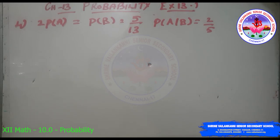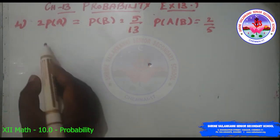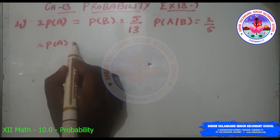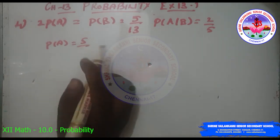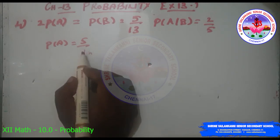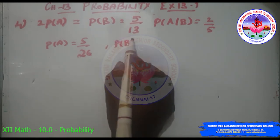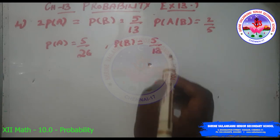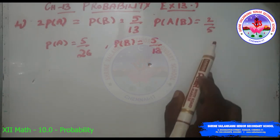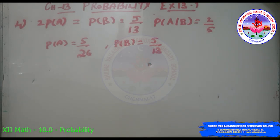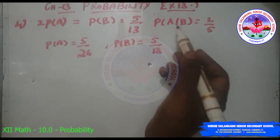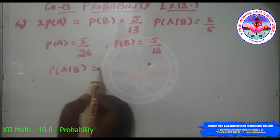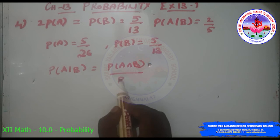Question 4: Evaluate P(A∪B) if 2×P(A) = P(B) = 5/13 and P(A|B) = 2/5. From 2P(A) = 5/13, we get P(A) = 5/26. P(B) = 5/13. Since P(A|B) = 2/5, to find P(A∪B) we need P(A∩B). Using the multiplication theorem: P(A∩B) = P(B) × P(A|B).